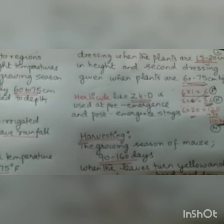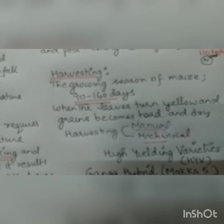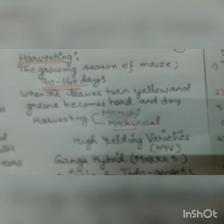Herbicide 2,4-D is used at the time of pre- and post-emergence. Harvesting depends on when the leaves of the crop turn yellow and the grains become hard. The growing season of maize is 90 to 160 days.